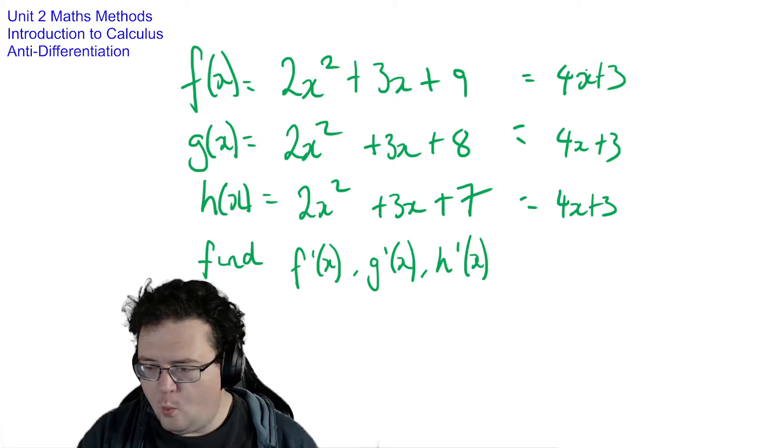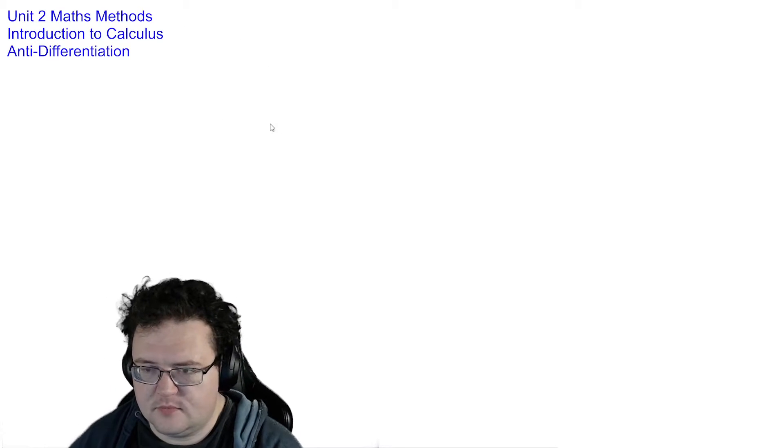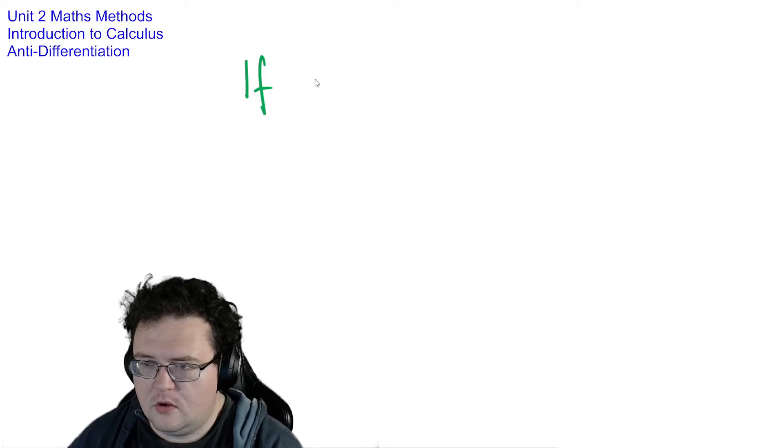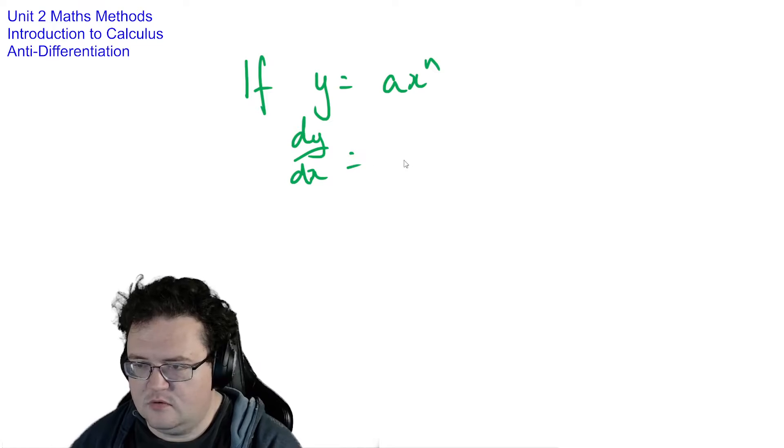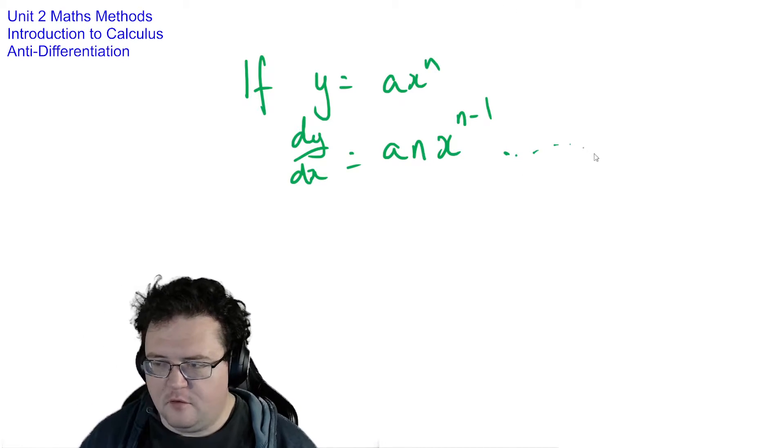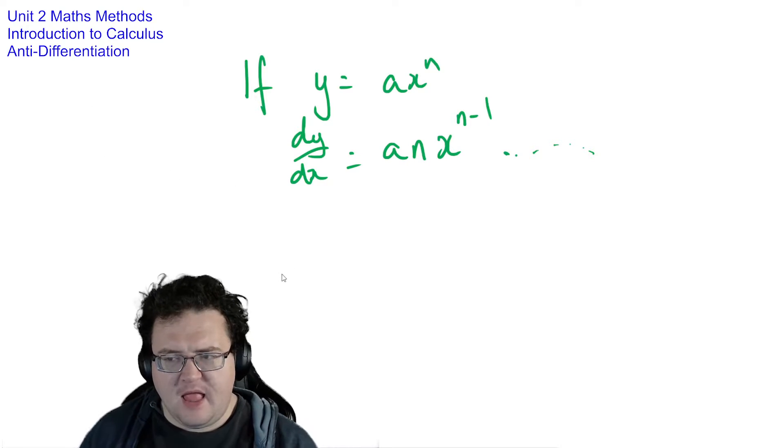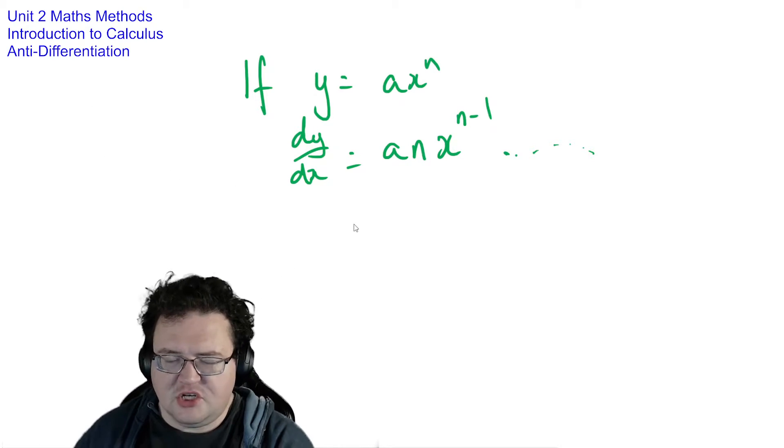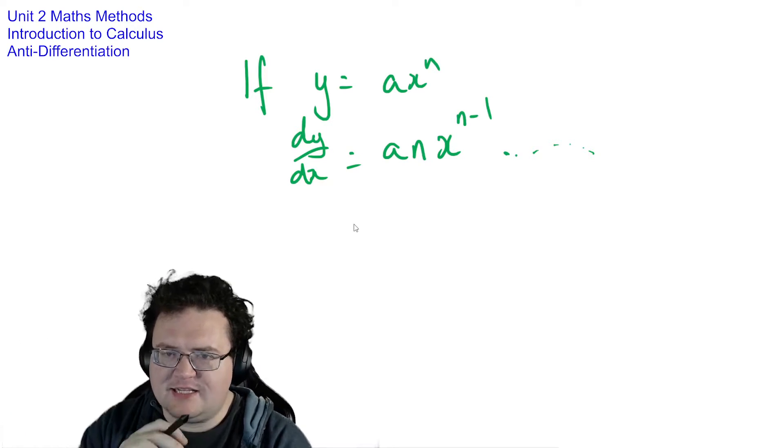Alright. So when we're differentiating by rule, we have to work with... If y equals ax to the n, then dy dx equals anx to the n minus 1. And so forth for every other term in the sequence. But as you can see there, multiple different equations can create the same derivative equation.